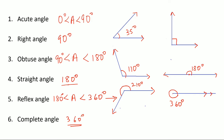So to summarize: an acute angle is between 0 and 90 degrees; a right angle is exactly 90 degrees; an obtuse angle is greater than 90 and less than 180 degrees; a straight angle is exactly 180 degrees; a reflex angle lies between 180 and 360 degrees; and a complete angle is exactly 360 degrees. Hope this is clear to all — thank you.